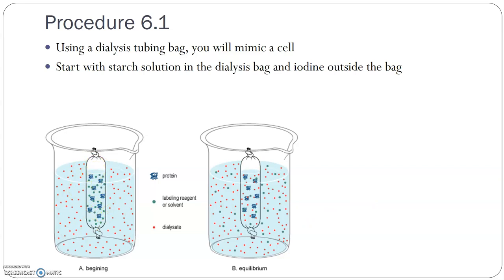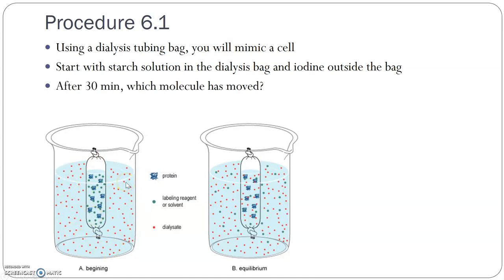The tubing has little holes in it that are going to mimic a plasma membrane, but can't be exactly like a plasma membrane because it's not alive. The pores are going to be able to differentiate between the size of the molecules moving around it. In this picture, they're using a protein instead of starch, but you can think about that as starch. The starch is going to start inside the bag, and on the outside you're going to put the iodine solution. You'll let this sit for about 30 minutes and determine which molecule actually moved.